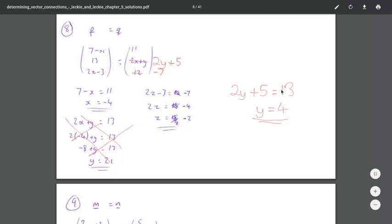2y plus 5 must equal 13, so subtract 5 from both sides and then divide through by 2, y equals 4.